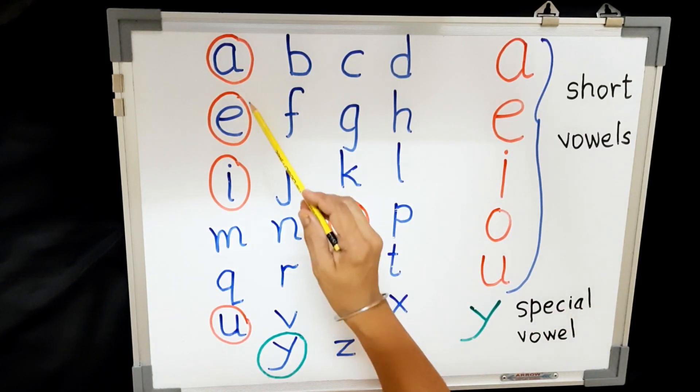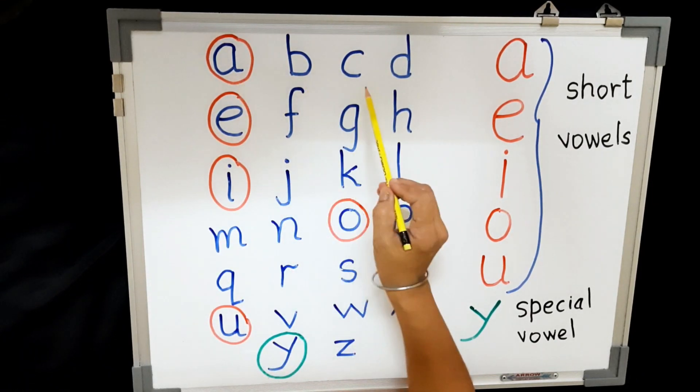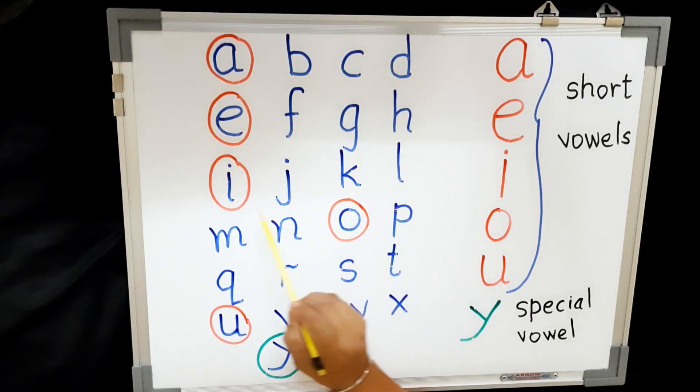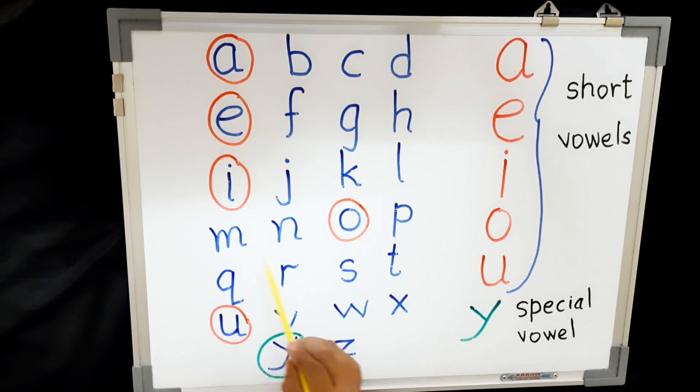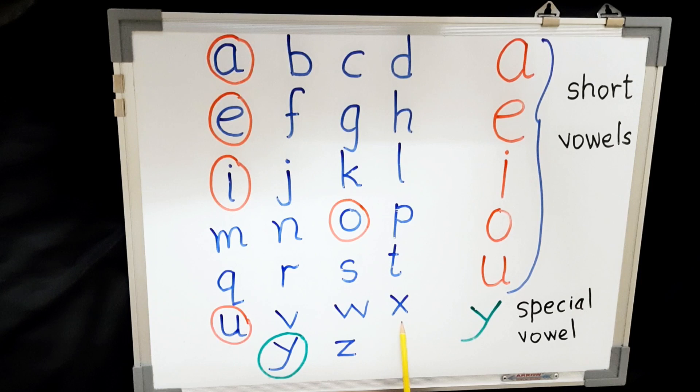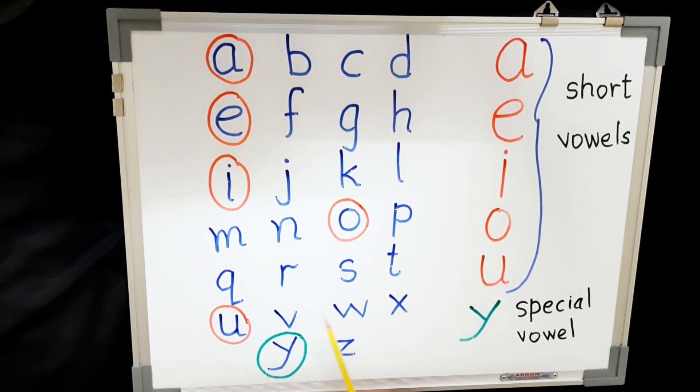Here are the 26 alphabets, you repeat after me. A, B, C, D, E, F, G, H, I, J, K, L, M, N, O, P, Q, R, S, T, U, V, W, X, Y, Z. These are 26 alphabets.